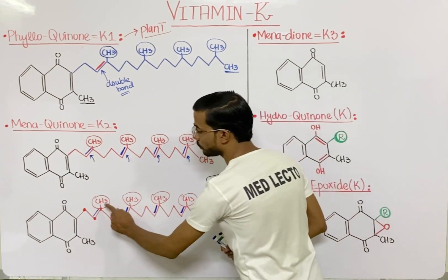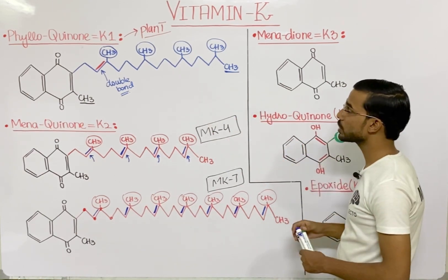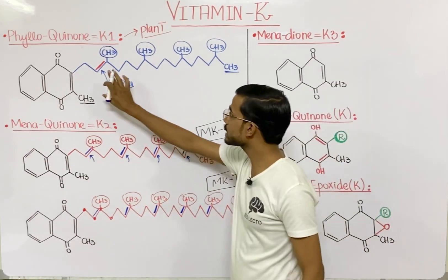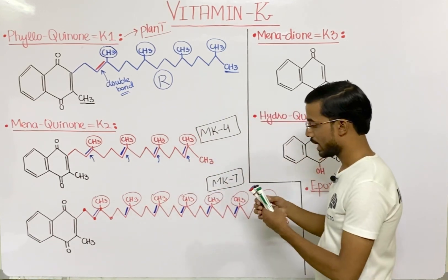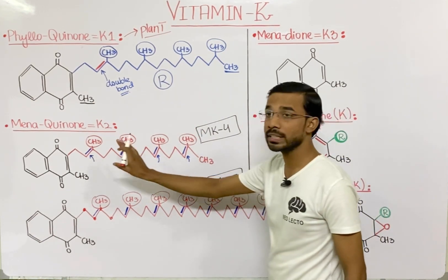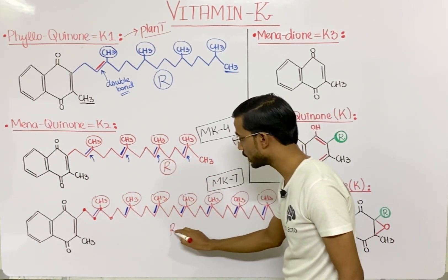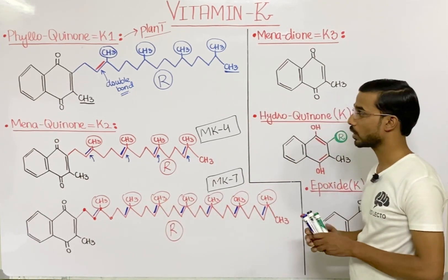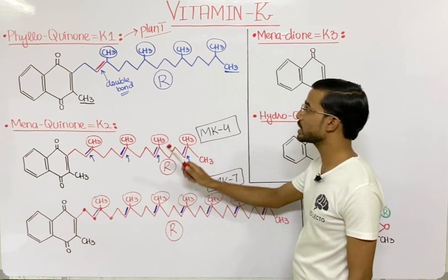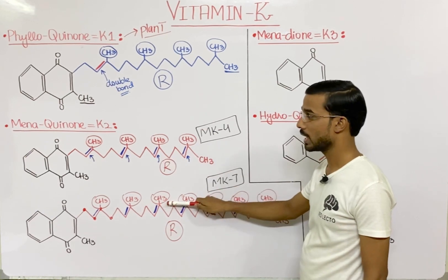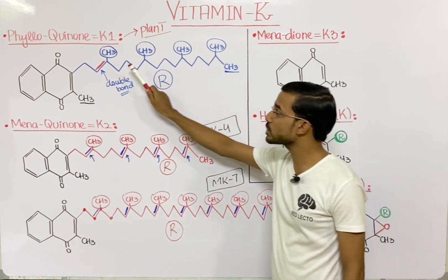If you look at the three structures, at the corners you will see the presence of carbon atoms. Instead of writing the whole structure I can write the side chain with R, representing the alkyl group. The ring structure will be similar across all forms, but the point of difference will be the side chain. In menaquinone you will see multiple double bonds, while in phylloquinone there is just one double bond.